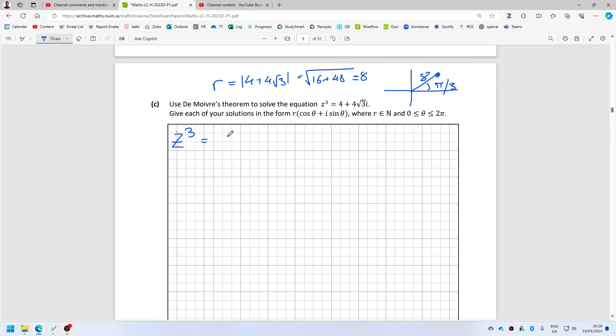would equal 8 bracket cos pi over 3 plus 2n pi, plus i sine pi over 3 plus 2n pi. So cube root it, so that 8 cube root becomes a 2.